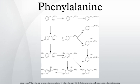The codons for L-phenylalanine are UUU and UUC. L-phenylalanine is a precursor for tyrosine, the melanin signaling molecules dopamine, norepinephrine, and epinephrine, and the skin pigment melanin.